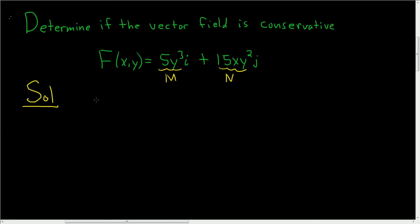And to check if it's conservative, you just compute del M, del Y. In this case, that's simply 3 times 5 is 15, so 15 Y squared.